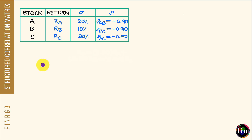In this video, we will take a look at this concept of structured correlation matrices. Specifically, we will focus on this property of positive definiteness. This video will be helpful for candidates who are preparing for the FRM Part 1 exam. To understand this property of positive definiteness, let's take a look at a very simple solved example.